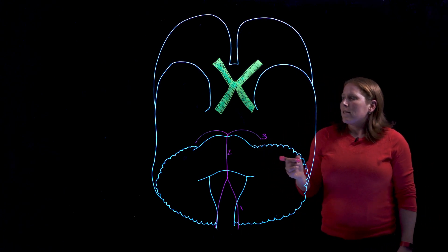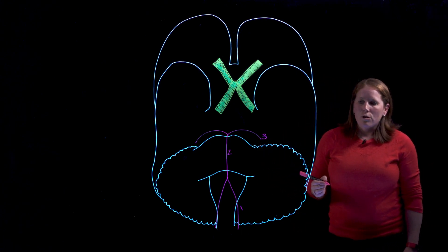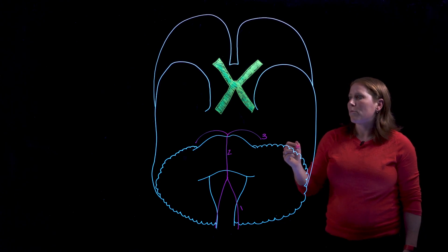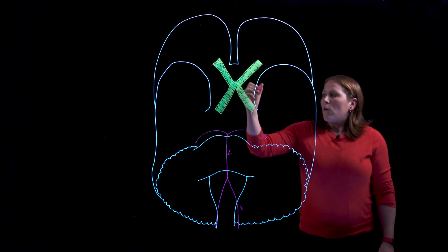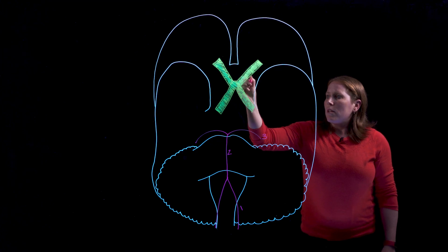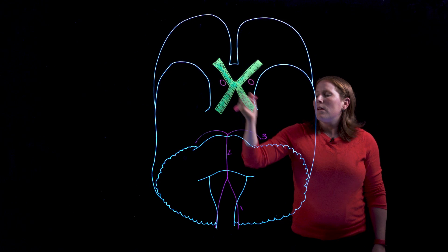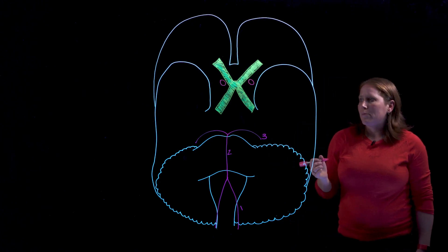The other artery that ascends the neck to supply the brain is the internal carotid artery and we saw that as a branch of the common carotid arteries in a previous video.